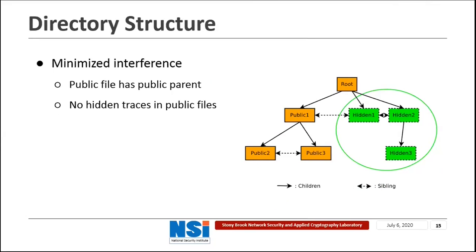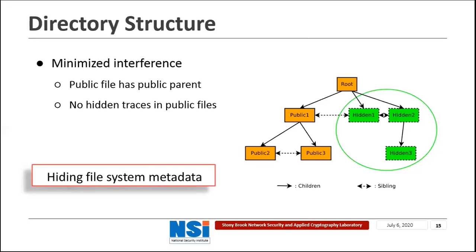In this way, we use virtual hidden pages in the intermediate layer to hide the hidden bit embedding process. Besides, Infuse has a directory structure that minimizes interference between public files and hidden files. All public files have public parents and all hidden files have hidden parents except from the root. By separating public files and hidden files under the directory structure, we ensure that public files are not affected by hidden traces. Moreover, we also store the metadata for hidden files in the out-of-band storage bits, so the adversary cannot detect the existence of hidden data by looking for hidden file metadata.